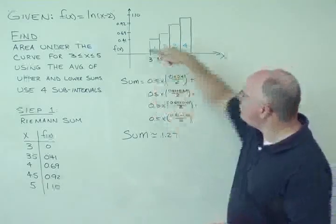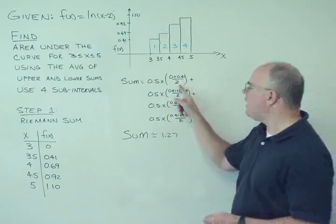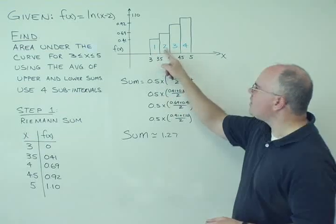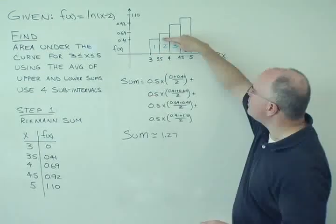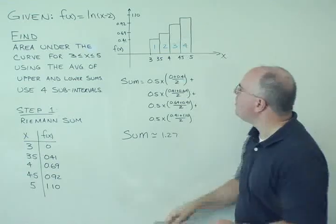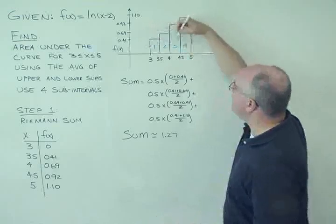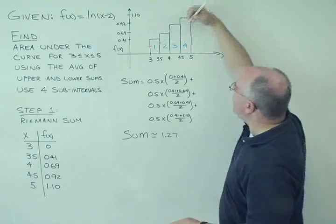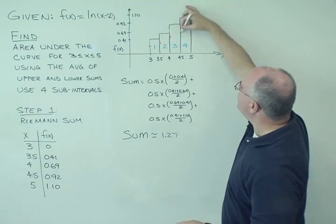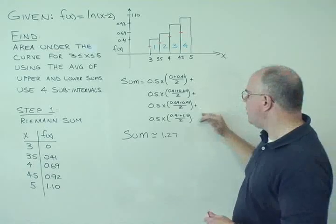And then I want to take the average of 0 and 0.41. So I have 0 plus 0.41, and I divide by 2. And so I'm going to calculate that number and go to the next interval. The next interval says the lower value is 0.41, the upper value is 0.69. So I'm taking the average. In this case, the first average was right here. The second average will be right here. And then the third average will be about here. And finally, the fourth average will be somewhere in this vicinity.